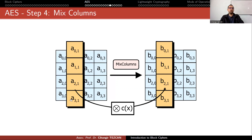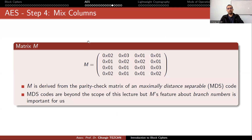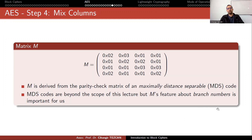For MixColumns, you take each column and multiply it with a matrix M, then write the result back to the same column. The matrix M is derived from the parity check matrix of a maximally distance separable (MDS) code, coming from coding theory. This choice provides better resistance against cryptanalysis because M's branch number tells us the minimum number of bytes that will be modified when you modify a few bytes in the input.